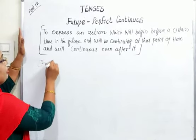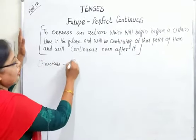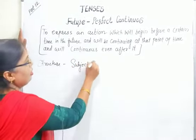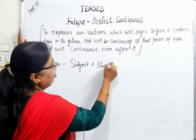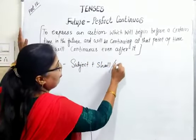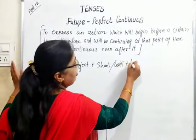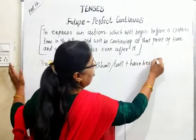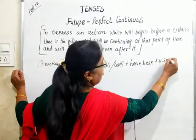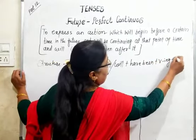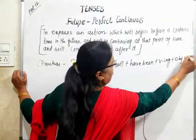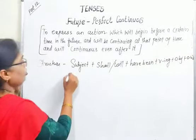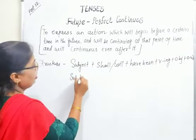The structure is: Subject + shall/will + have been + verb(ing) + object + other words. For the affirmative form, we use shall or will before have been, followed by the verb in -ing form.